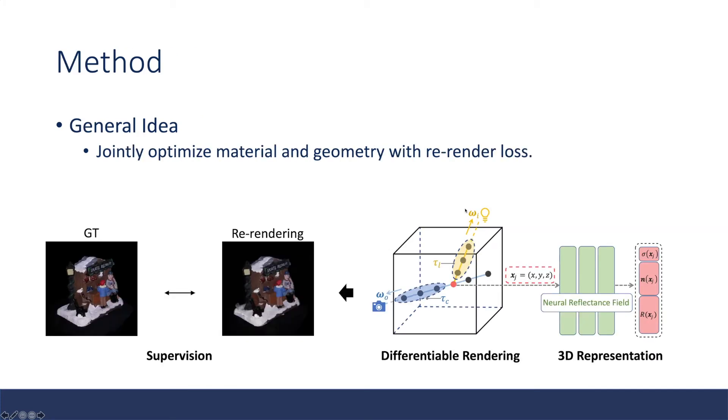Here are the methods of the neural reflectance field. The general idea is similar to NERF. It's still trying to jointly optimize for this scene representation with photometric loss. To get into it, we need to know three parts.